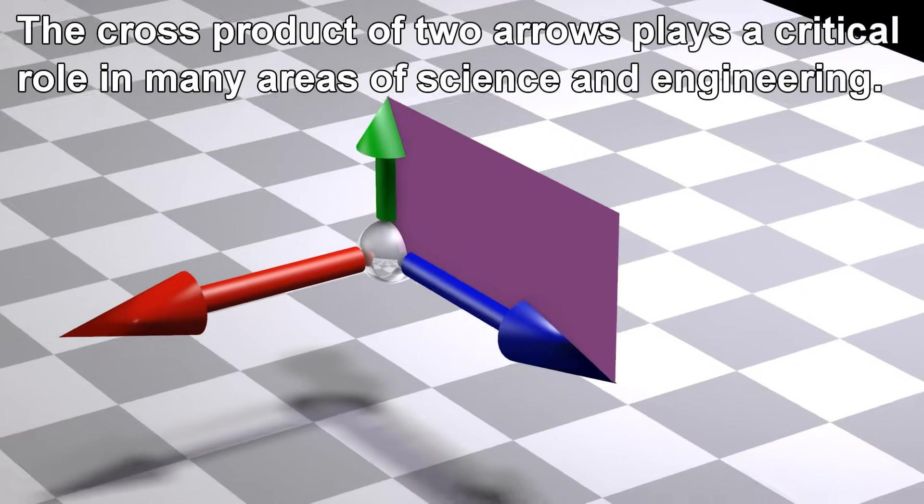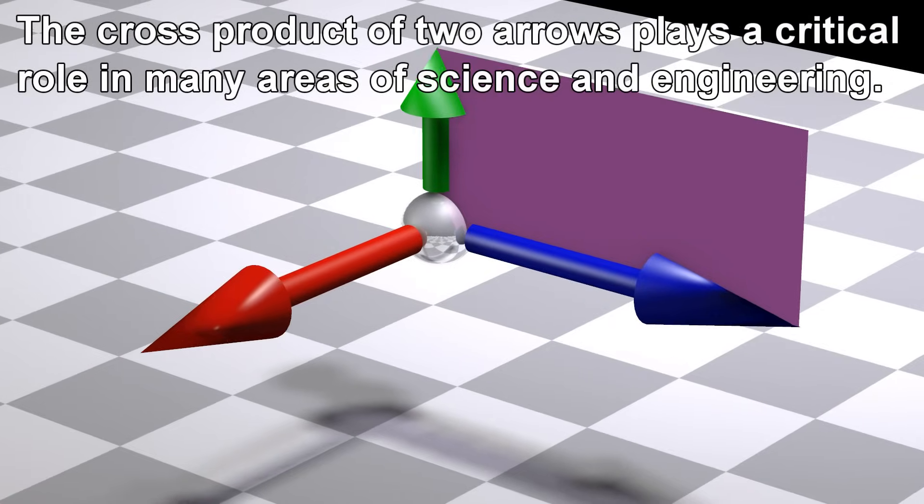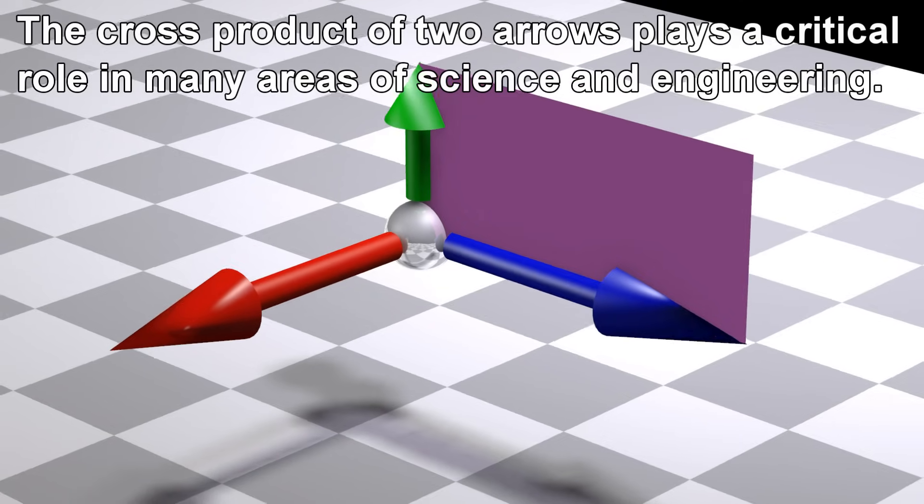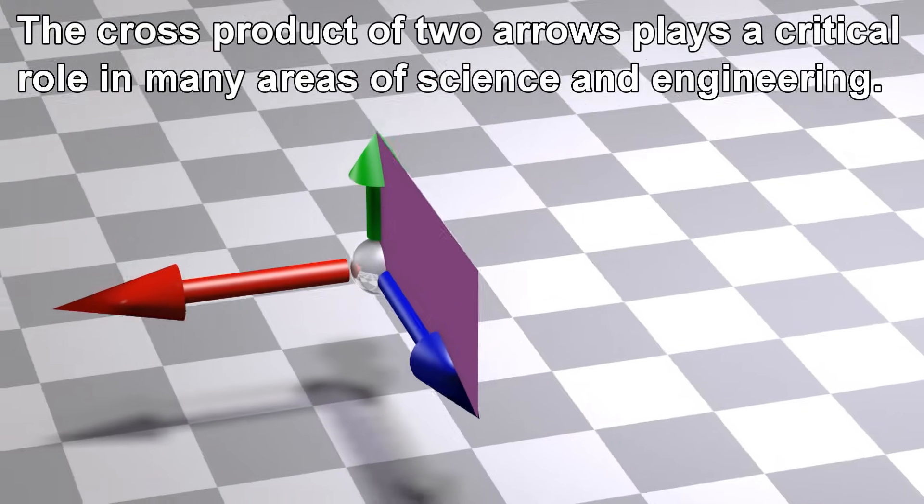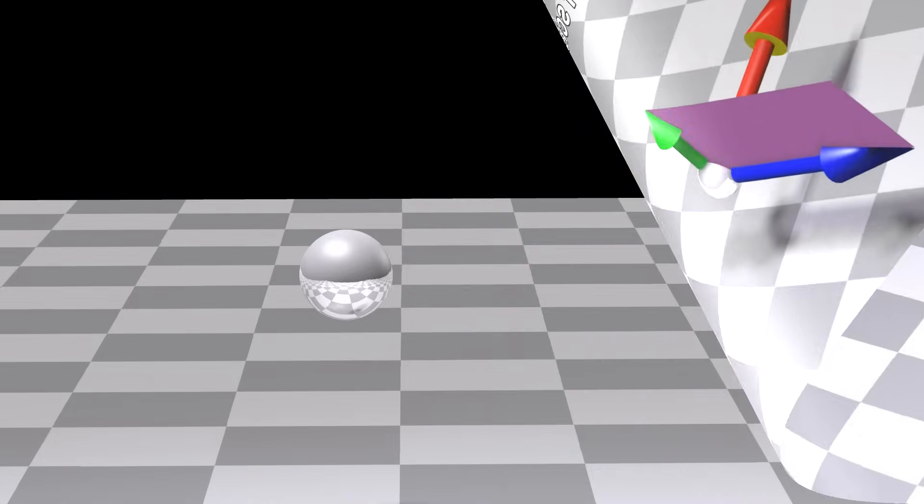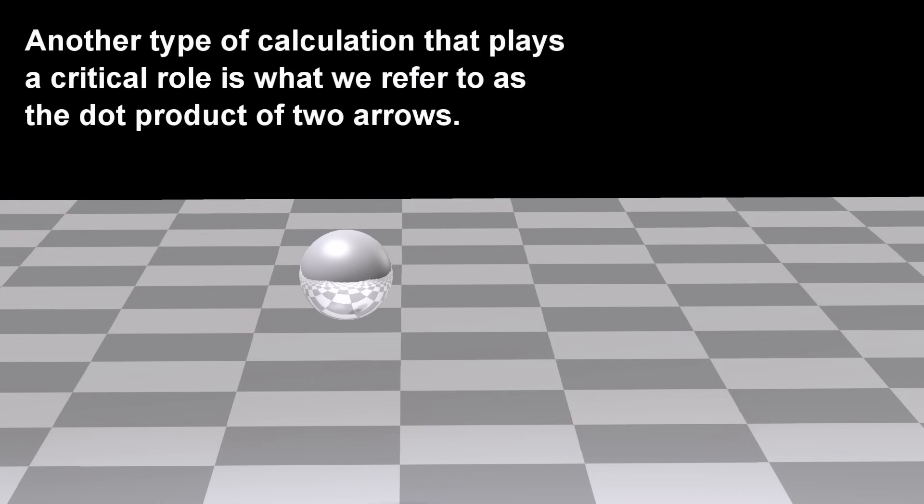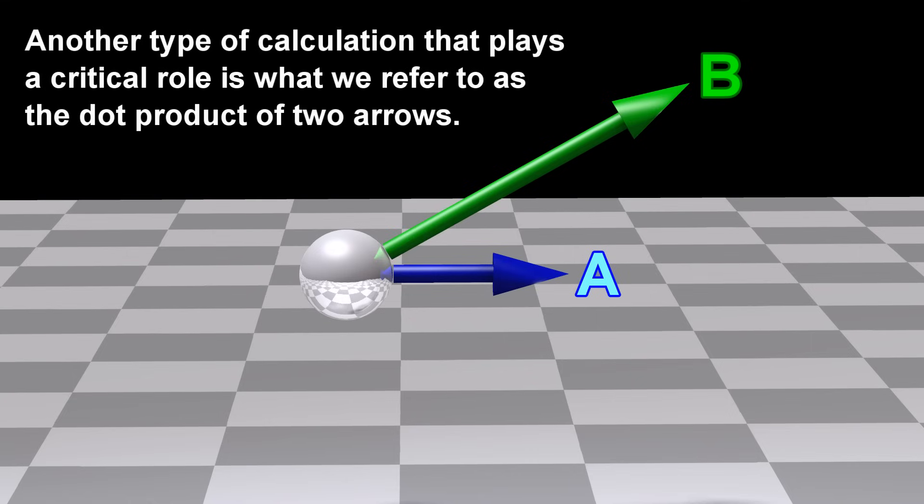The cross product of two arrows plays a critical role in many areas of science and engineering. Another type of calculation that plays a critical role is what we refer to as the dot product of two arrows.